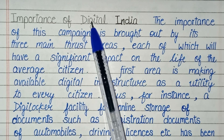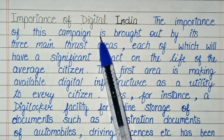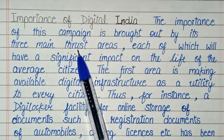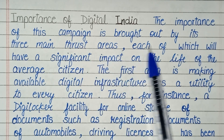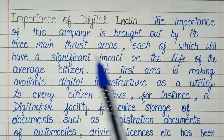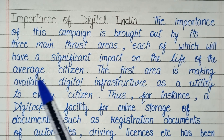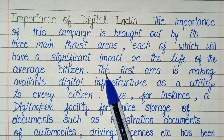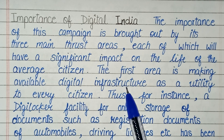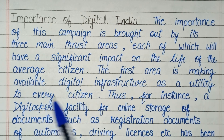The importance of this campaign is brought out by its three main thrust areas, each of which will have a significant impact on the life of the average citizen. The first area is making available digital infrastructure as a utility to the average citizen.